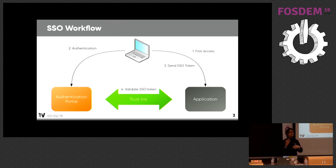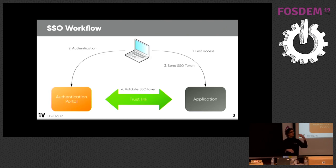This trust can be used with many protocols, like the CAS protocol, SAML protocol, OpenID Connect, etc. The goal is that when the user connects to another application — a second application — as he already owns a security token, he will be able to connect without logging in again. So he will just have to enter his password or anything else at the very first time.